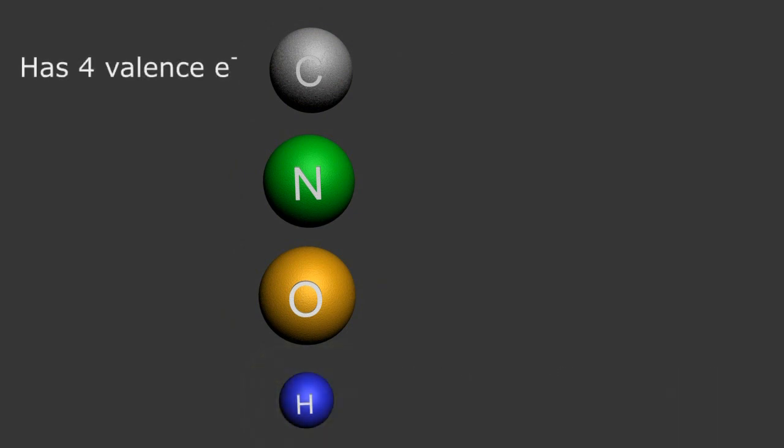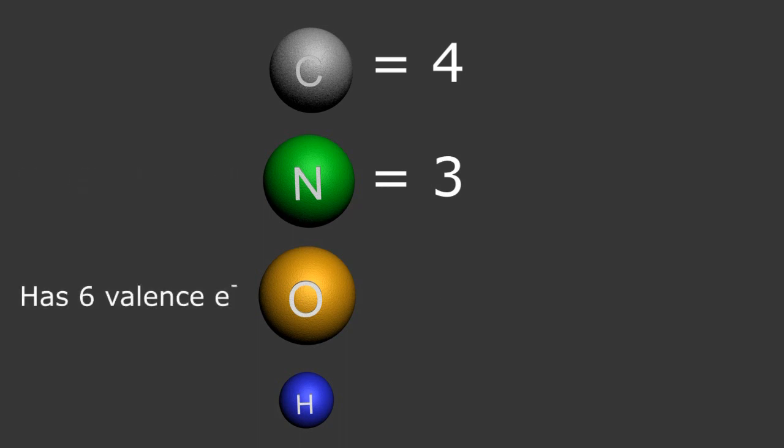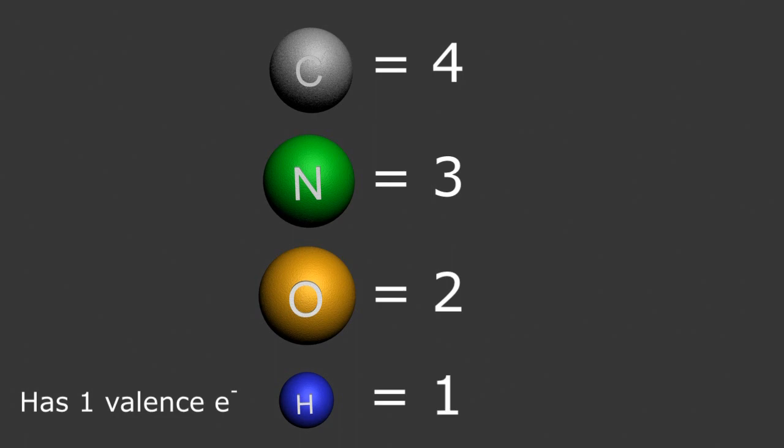Carbon has 4 orbiting electrons and needs 4 more to be complete. Nitrogen has 5 and needs 3 more. Oxygen 6 and needs 2 more. And of course, hydrogen has 1 and only needs 1 more.